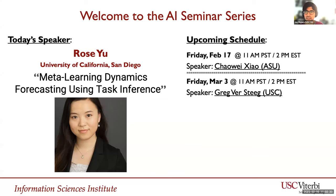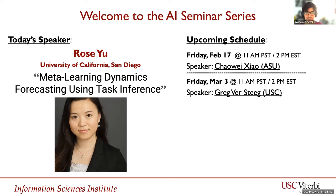We're pleased to have Rose Yu here. Dr. Yu is an assistant professor at UCSD, just down the coast. She did her PhD at USC and then did a postdoc at Caltech, so definitely Southern California representation. Her research focuses on advancing machine learning techniques for large-scale spatiotemporal data analysis with applications to sustainability, health, and physical sciences. A particular emphasis is on physics-guided AI, which aims to integrate first principles with data-driven models. Among her awards, she has won an NSF Career Award, Faculty Research Awards from JP Morgan, Facebook, Google, Amazon, and Adobe, several Best Paper Awards, Best Dissertation Award at USC, and she was nominated as one of the MIT Rising Stars in EECS. A warm welcome to Rose.